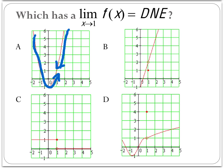Let's look at choice B. Again, as I trace from the left side and the right side, it meets up. Now notice there's a hole there — there's some strange behavior — but the graphs on both sides of that hole still meet up. Therefore the limit doesn't exist.